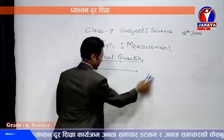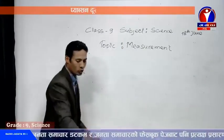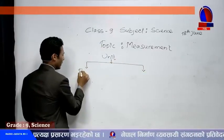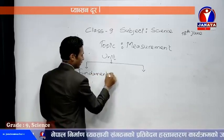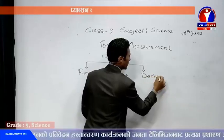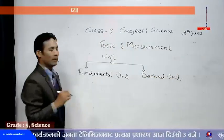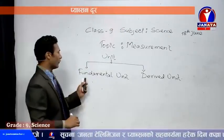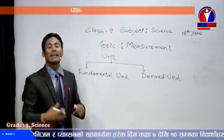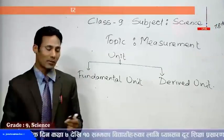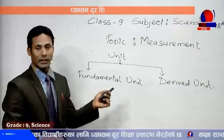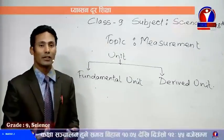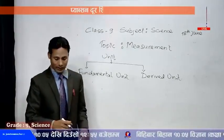Units can also be categorized into two groups: fundamental unit and derived unit. A fundamental unit is the unit used to express a fundamental quantity. It is also the unit that is independent of other units. Examples include meter, kilometer, kilogram, second, and ampere — these are all fundamental units.